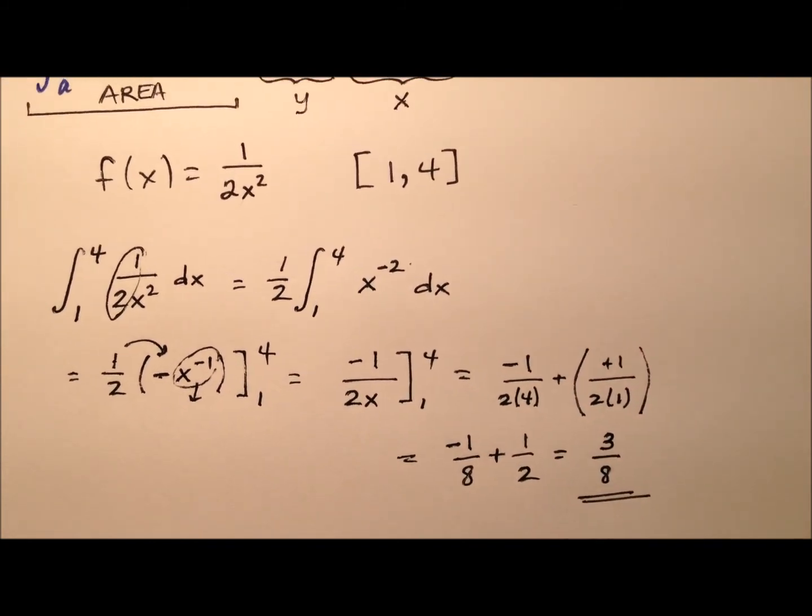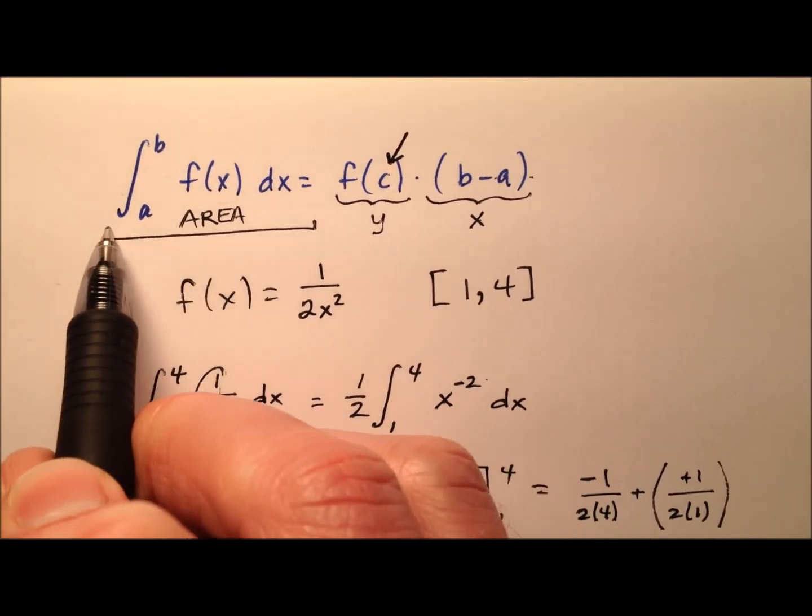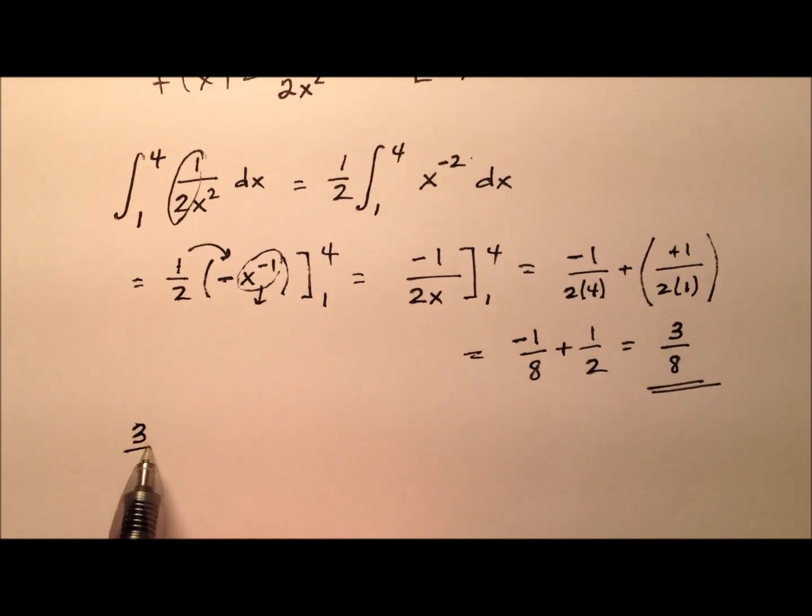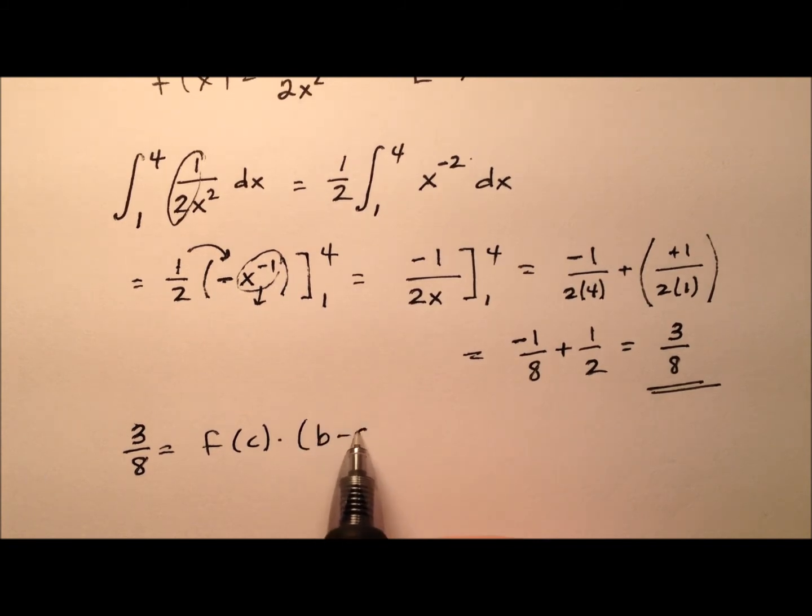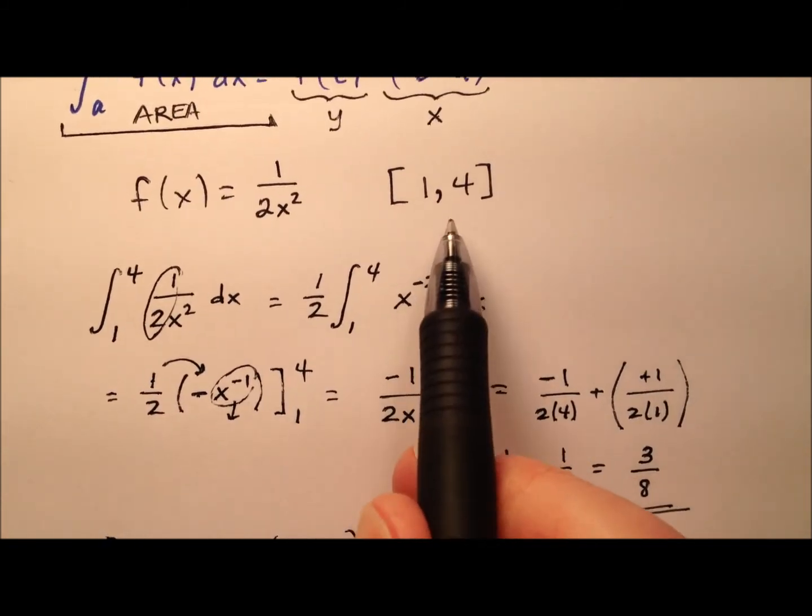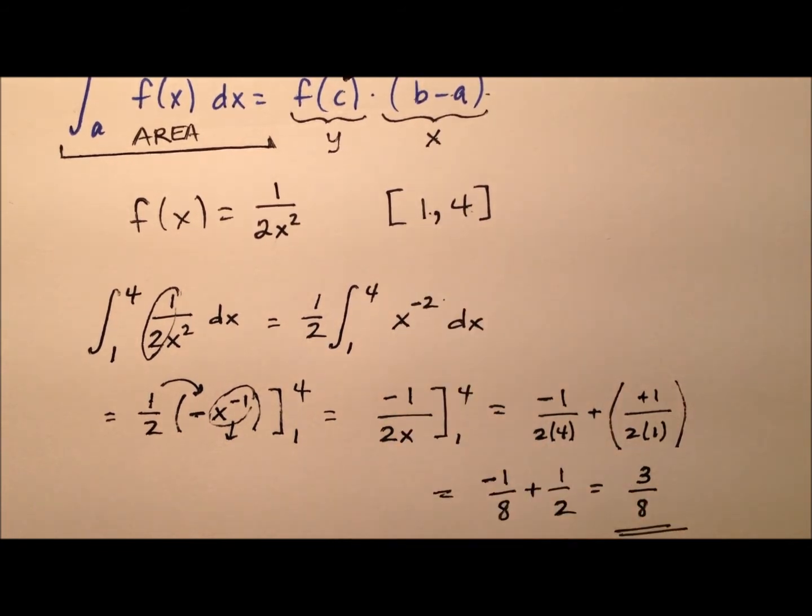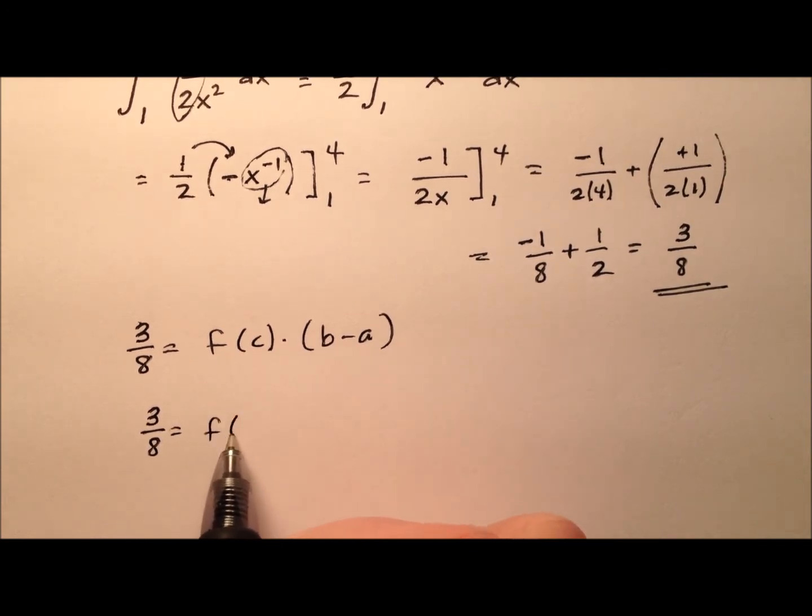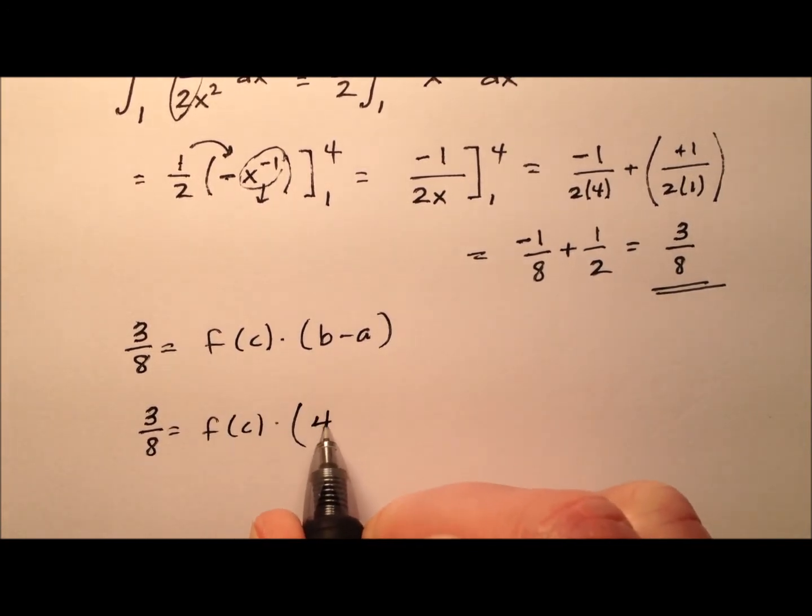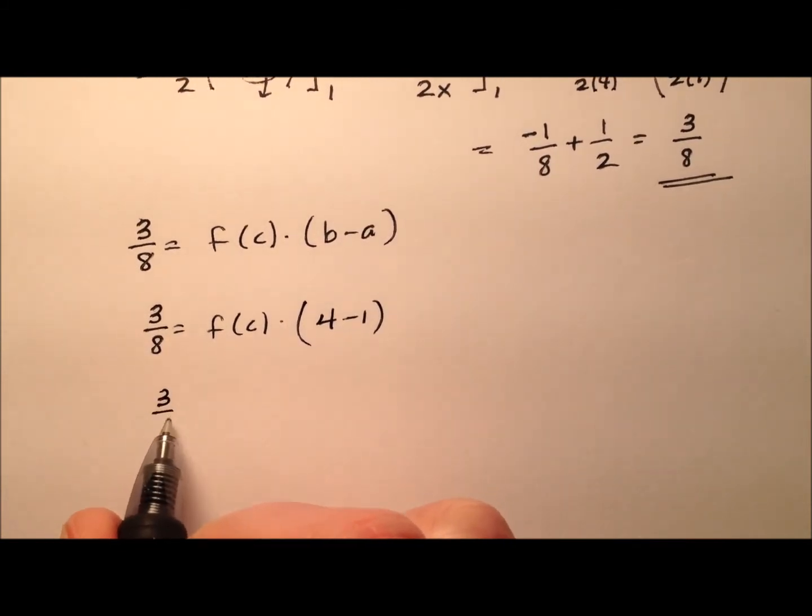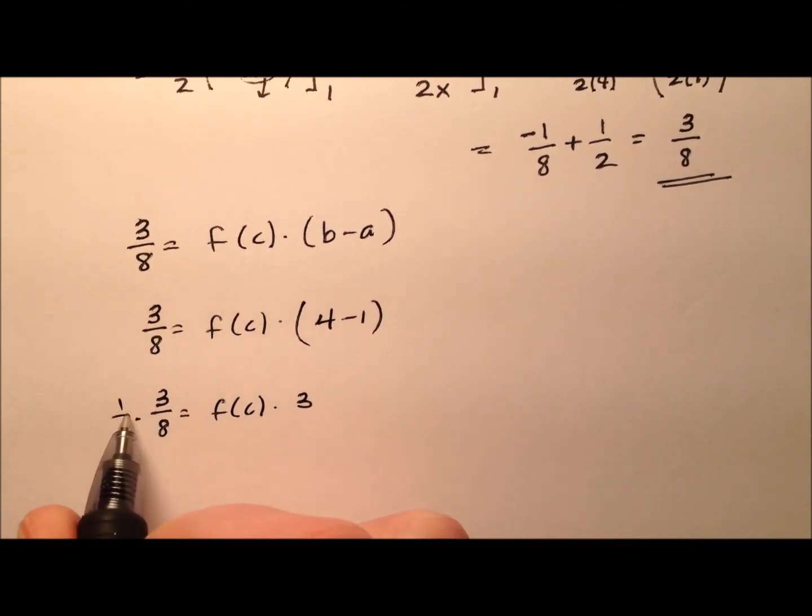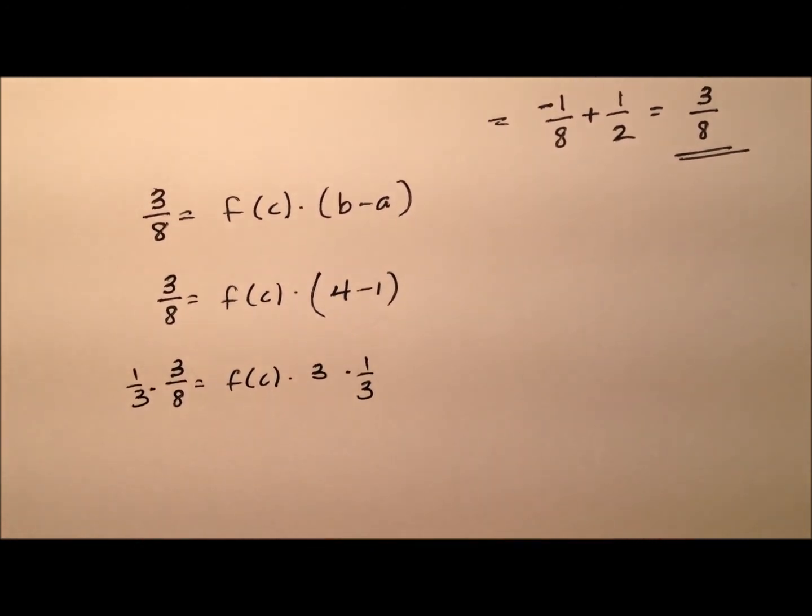So this three eighths now is the area, so we're saying that's the left side of this equation. So when we write this, we'll say three eighths is equivalent to some f of c value times b minus a. Well, we know what the b and the a are, because we have the four and the one here for our region. So three eighths equals f of c times four minus one. So this three eighths equals f of c times three.